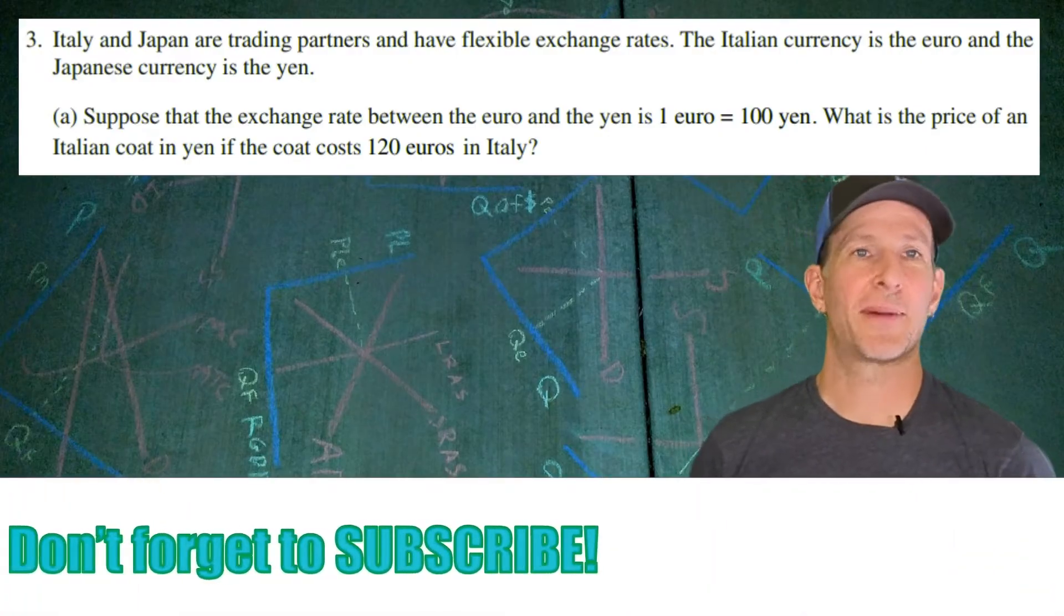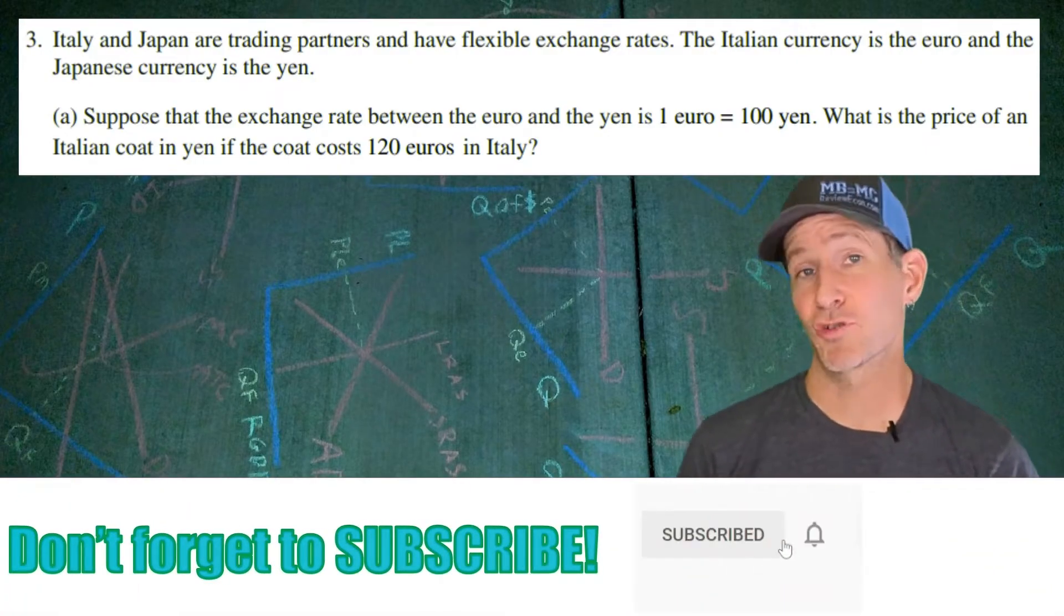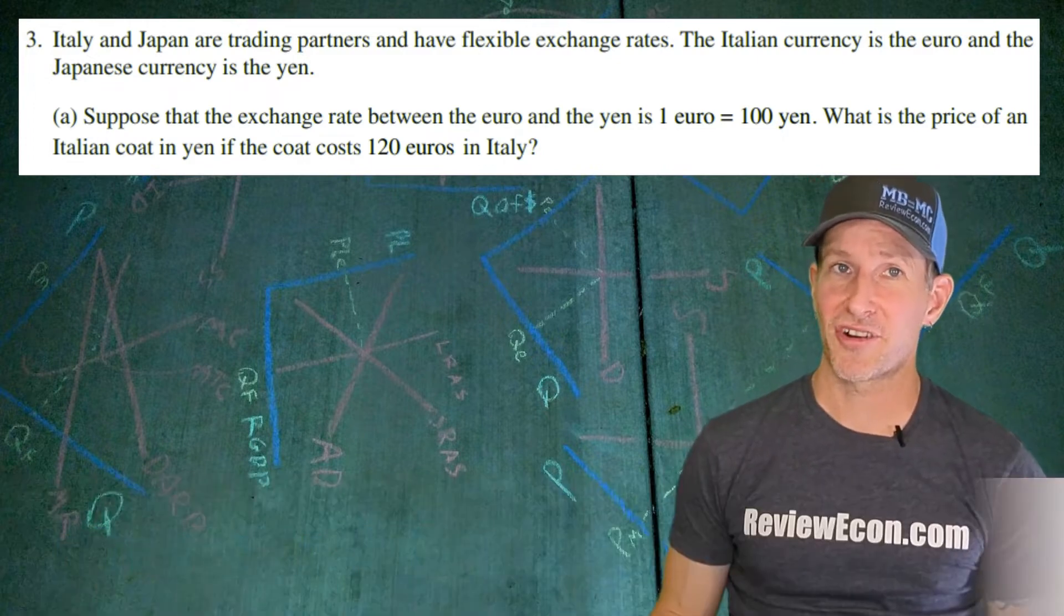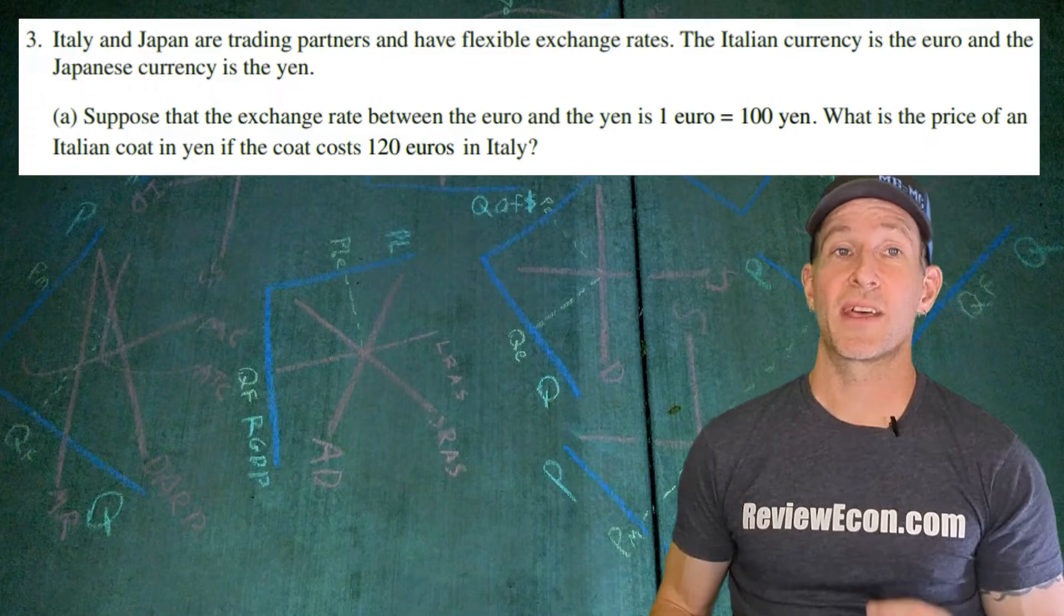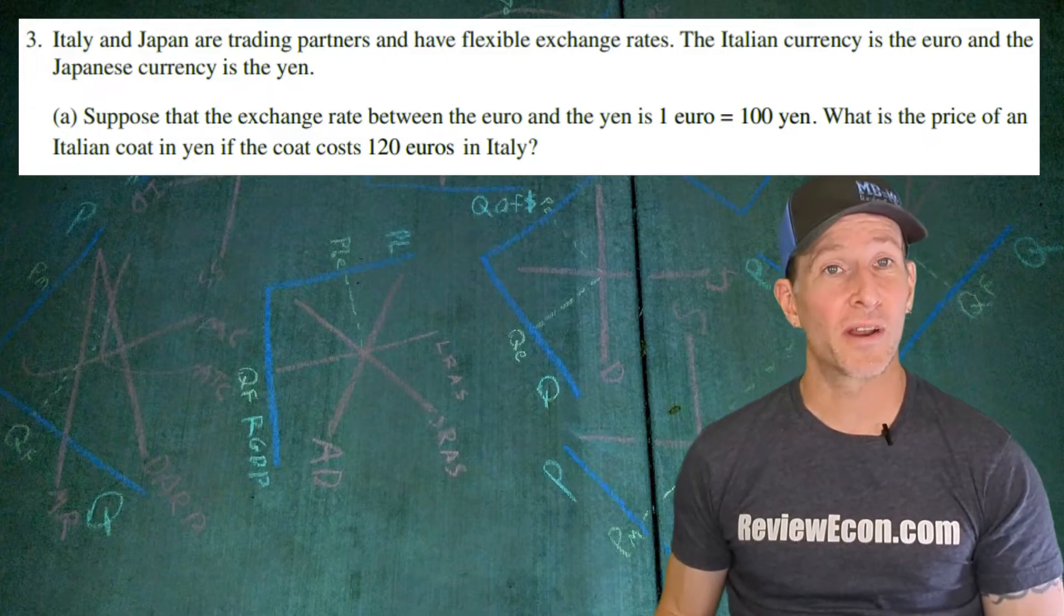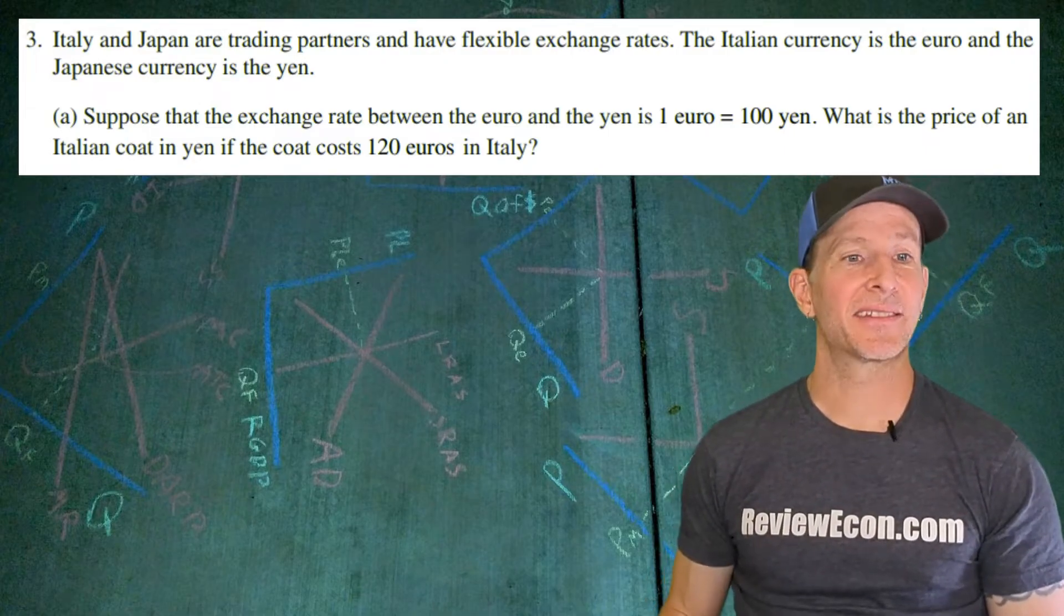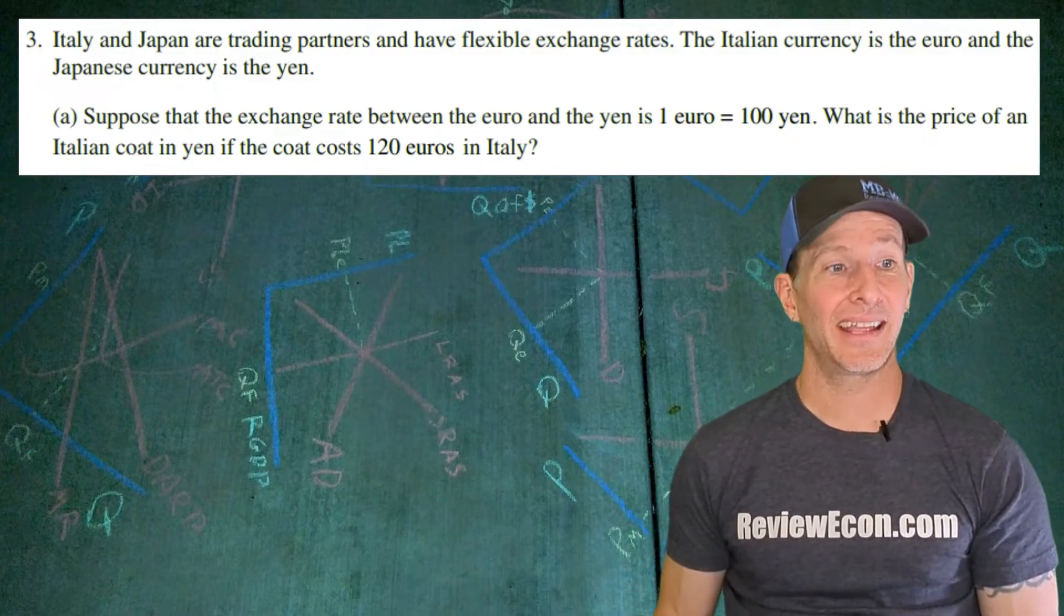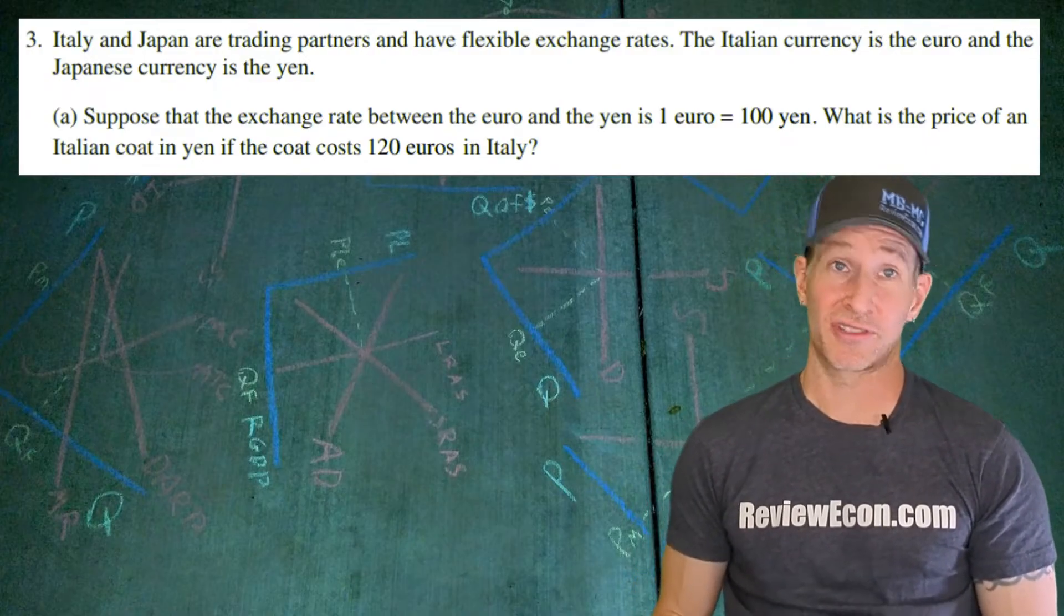This question starts off by talking about Italy and Japan. They are trading partners and they have flexible exchange rates. The Italian currency is the euro and the Japanese currency is the yen. First, we have to assume that the exchange rate is one euro for 100 yen. The first question asks us to say what the price of an Italian coat is in yen if it costs 120 euros in Italy.